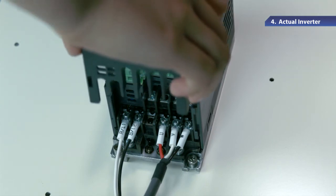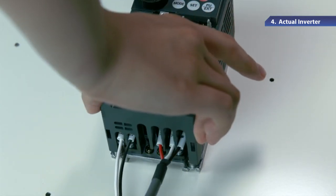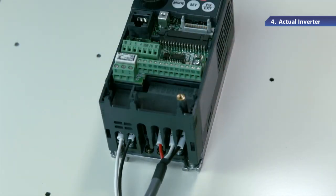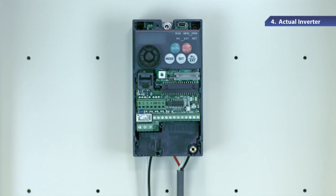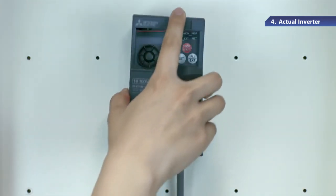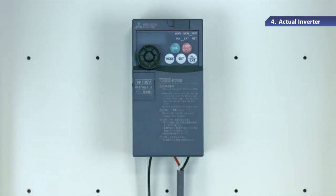Next, attach the comb-shaped wiring cover. Make sure to keep one motor wire between the teeth of the wiring cover and to fit the cover to the inverter along the guides. Attach the front cover straight to the front of the inverter body. Now the inverter is ready to use.